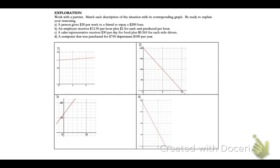Alright, let's look at this first situation. We've got a person who gives $20 per week to a friend to repay a loan. If you think about it, the loan was $200, so you're looking for a graph that starts at $200 and then is decreasing. You've got two choices of decreasing graphs, two and four. Look for one that starts at $200, and you should focus in on graph number two.